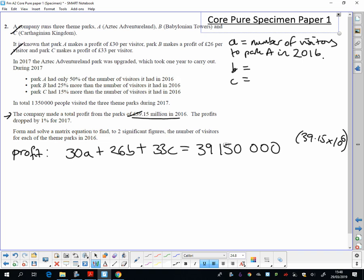Right, what else have we got now? We've now got some information about the number of visitors. So let's have a look at visitors. What have they told us? They've told us the visitors during 2017, which is this information here. So let's have a look at visitors in 2017.